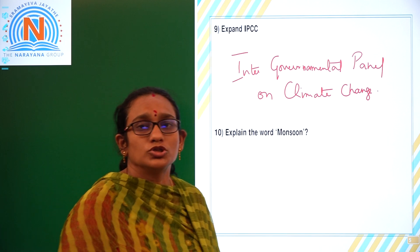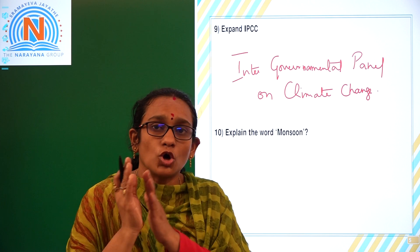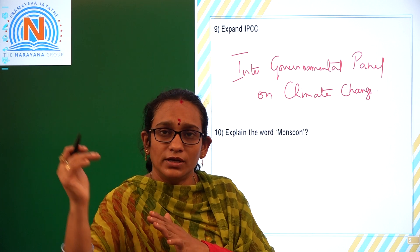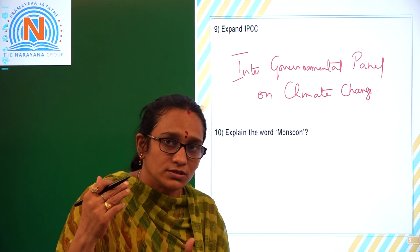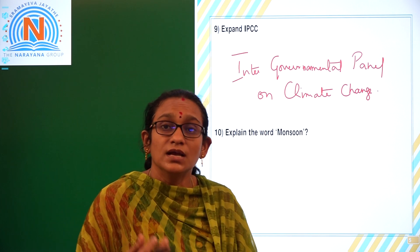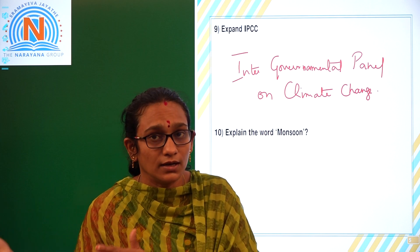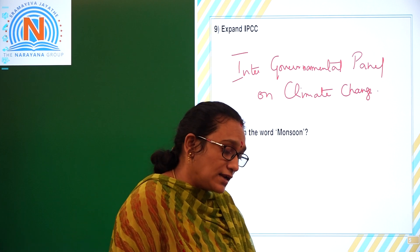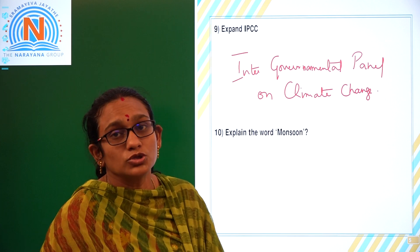Explain the word Monsoon. The climate of India is strongly influenced by winds. Many of the Arab countries, when they used to come to India, found through the sea route the reversal of the winds. With the help of this reversal of winds, they sailed in the sea and tried to reach our country, India. The Arabs named these seasonal reversal winds as monsoons.